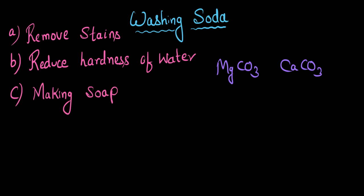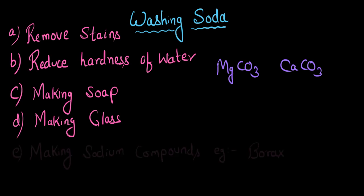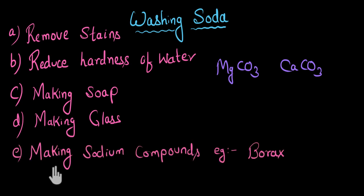Now apart from these, washing soda is also used to make glass. It can be mixed with silica and some other compounds to make soft glass. And also, since washing soda has sodium in it, it can be used as an ingredient to make some sodium compounds. So another use is to make sodium compounds, for example, borax.